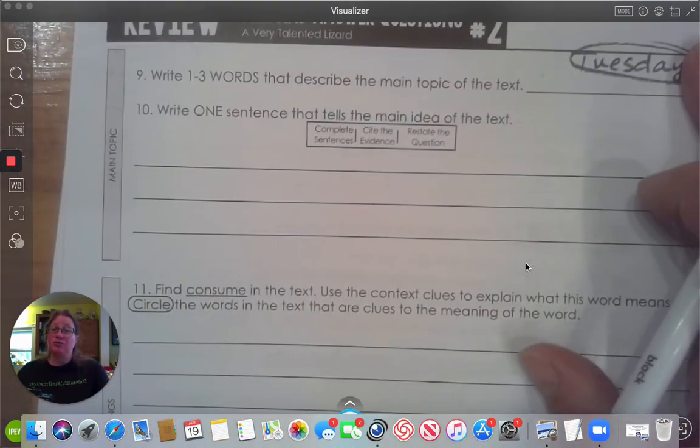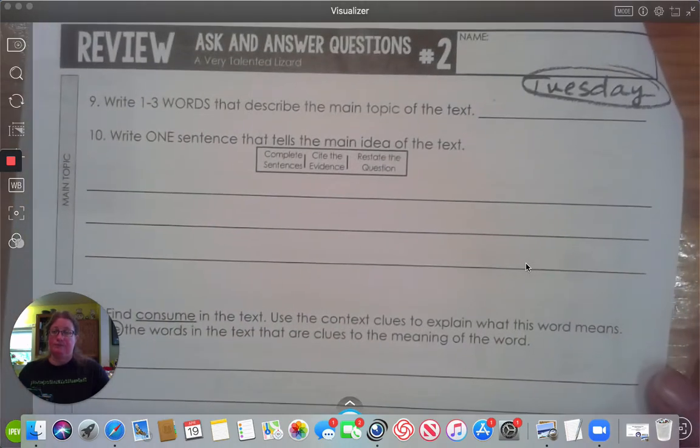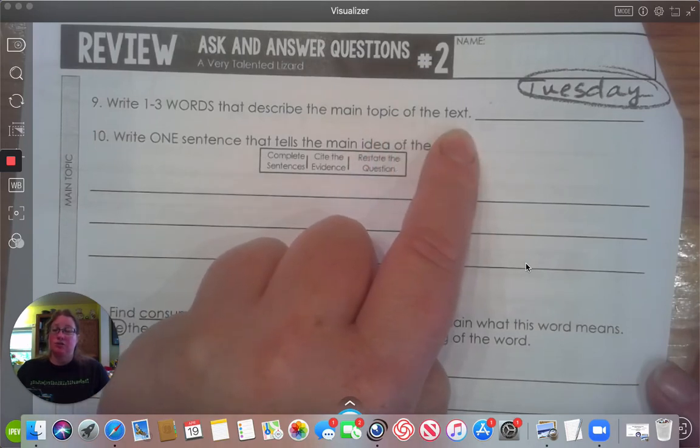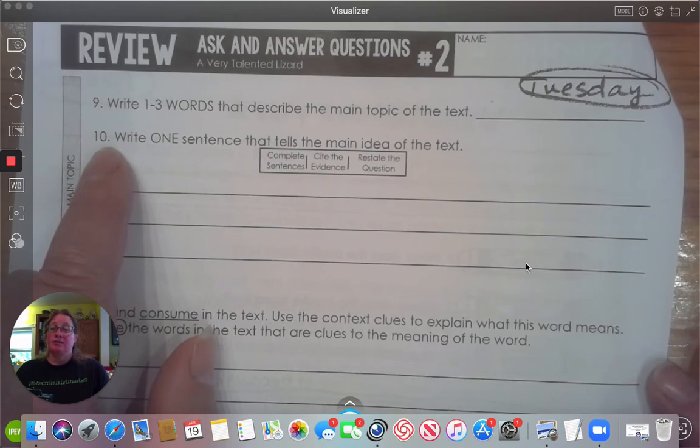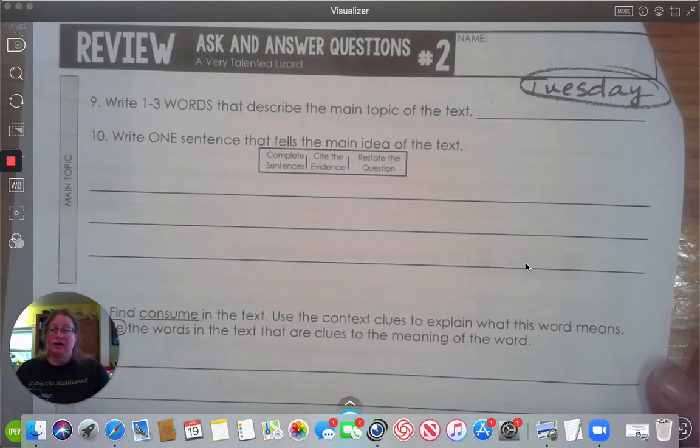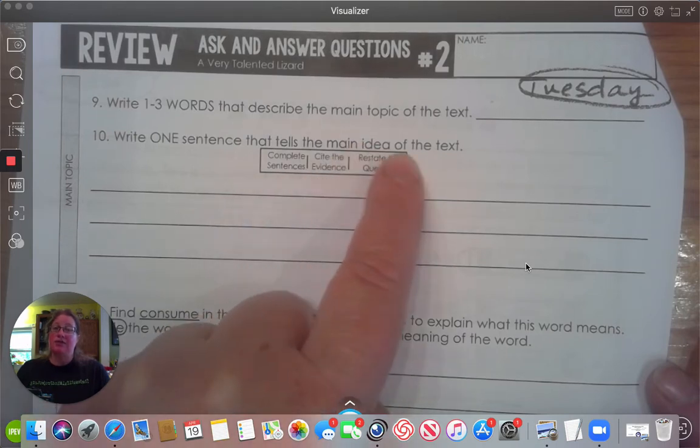If you turn the page, I will also read number nine and 10, 11, 12, and 13 for you. Write one to three words that describe the main topic of the text. What was this story mostly about? What is the main idea? Use only three words. Number 10. Write one sentence that tells about the main idea of the text. You may go back to the story and find a main idea, a good sentence that talks about what is included in this paragraph or story. Make sure you have a complete sentence. Make sure it has capital letters, punctuation, five to seven words, and it talks about the main idea of the text.